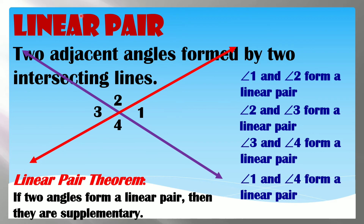The Linear Pair Theorem states that if two angles form a linear pair, then they are supplementary. So when two angles form a linear pair, they have a sum of 180 degrees — for example, Angle 1 and Angle 2 form a linear pair so their sum is 180.